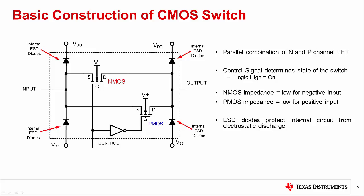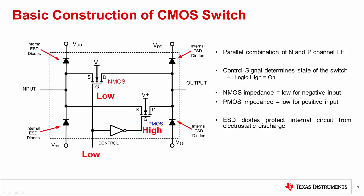Before moving to the protection of multiplexer circuits, let's first review the basic construction of a CMOS switch and its characteristics. A CMOS switch is formed by connecting an N-channel MOSFET and a P-channel MOSFET in parallel. This arrangement allows us to switch both positive and negative voltages at the output. A logic high at the gate of the NMOS enables it to allow negative voltages to pass to the output, while a logic low at the PMOS gate enables it to allow positive voltages to pass. The inverter turns on both transistors with a logic high and turns off both with a logic low.